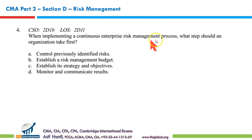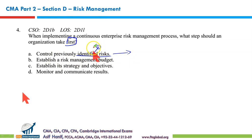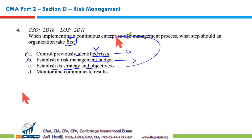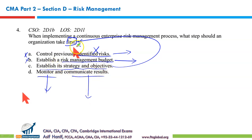When implementing a continuous enterprise risk management process (ERM), what step should an organization take first? Controlling previously identified risk or reassessing risk from ground zero is not the domain we're focused on in ERM. Establishing a risk management budget is an inappropriate term — no such thing exists; risk management helps in the budgeting process but there is no such term. The correct first step is to establish its strategy and objectives. Risk monitoring and communication come subsequent to strategy and objective setting. That makes C the correct option.